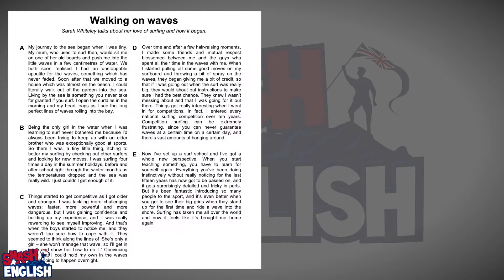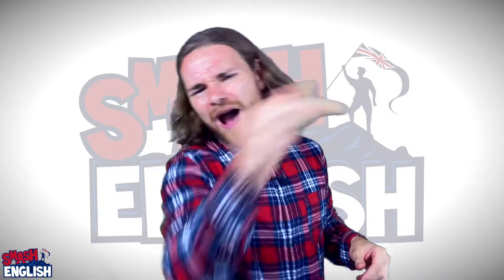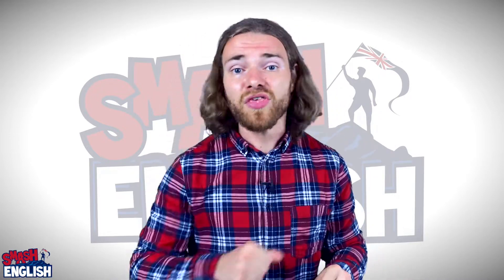Here is a text about surfing. You can see it is divided into five paragraphs: A, B, C, D and E. And here are the 10 questions. You need to specify which paragraph contains the information in questions 1 to 10. So how should you approach this exercise? Well, there is one thing that you should always, always, always do — and that is underline.